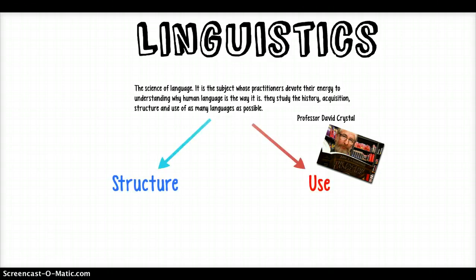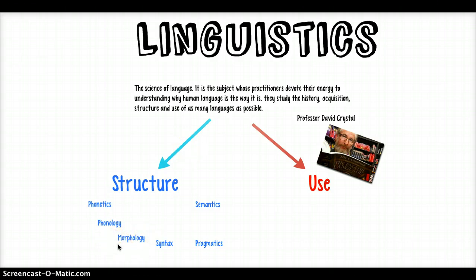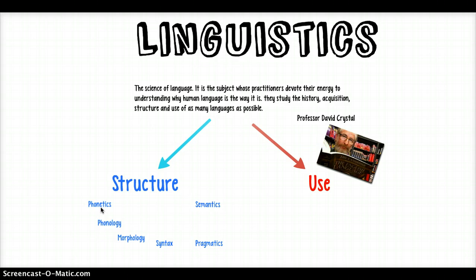I'm going to pick apart that structure-use distinction a little bit. On the structural side, we have different areas of linguistics. Structural linguistics is interested in the formal properties of language — things like word structure, which is studied in morphology. That's like how you make a participle from a root word — run, running — adding an -ing. Then there are phonological and phonetic areas of linguistics, to do with the study of sounds and how sound is used to make meaning.